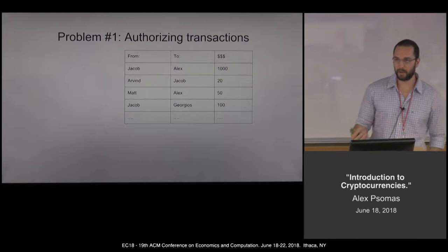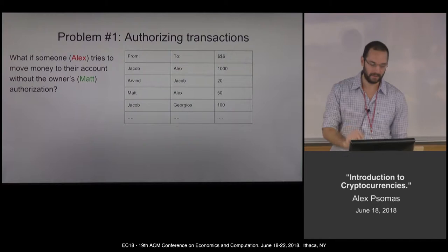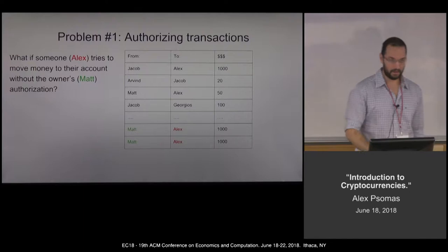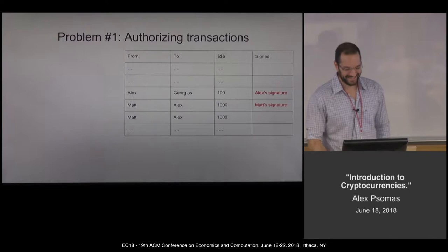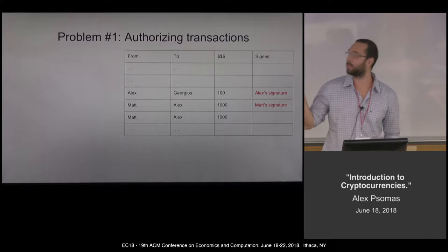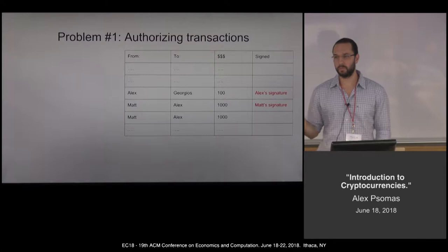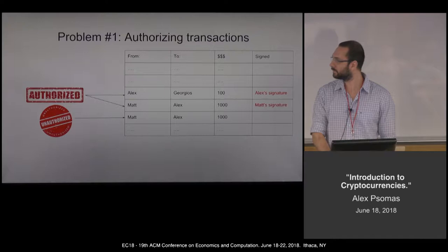Problem number one: authorizing transactions. For this ledger to make any sense, we should prevent things like Alex going and writing down 'Matt gave me a thousand bucks' without Matt's approval. The fix is going to be super simple — crypto will do this for us through digital signatures. We're going to add a column that checks if each transaction is signed by the person who is supposed to be giving out the money. A transaction from Alex to Georgios needs Alex's signature; a transaction from Matt to Alex needs Matt's signature. Every transaction with a signature will be called authorized; every transaction without a signature will be called unauthorized. Whoever is maintaining this ledger should only write down authorized transactions.